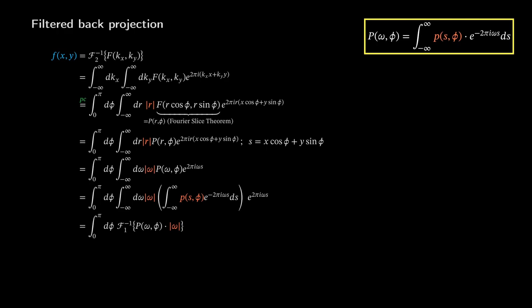To complete the whole picture, this multiplication of modulus omega in the frequency domain is nothing else than applying a high pass filter. To make this expression even more compact, we define a p tilde, which is the filtered back projection. Finally, we want to bring this in a form that computers can understand.